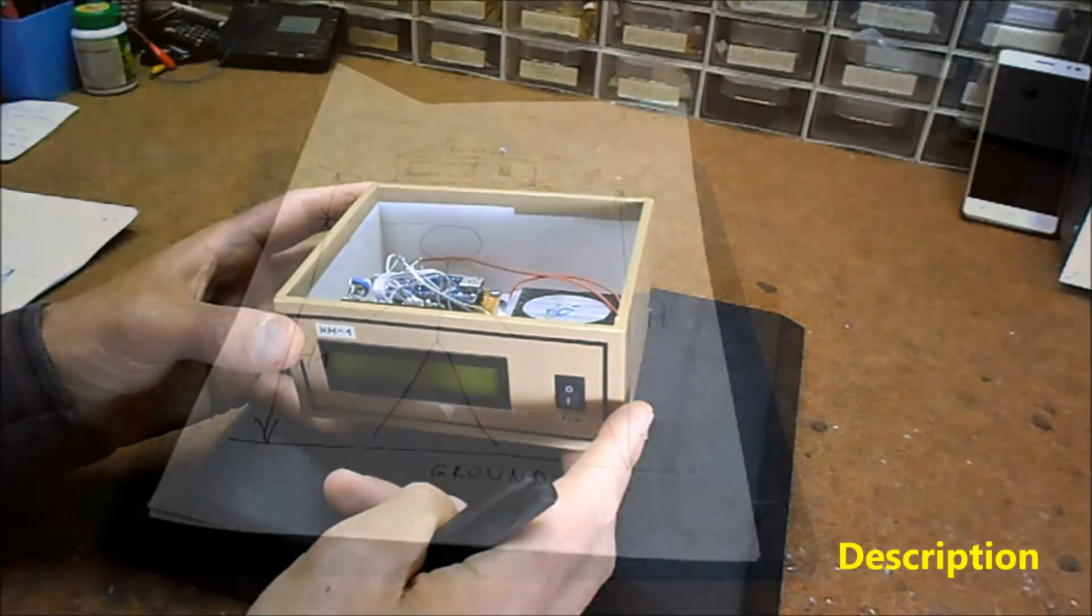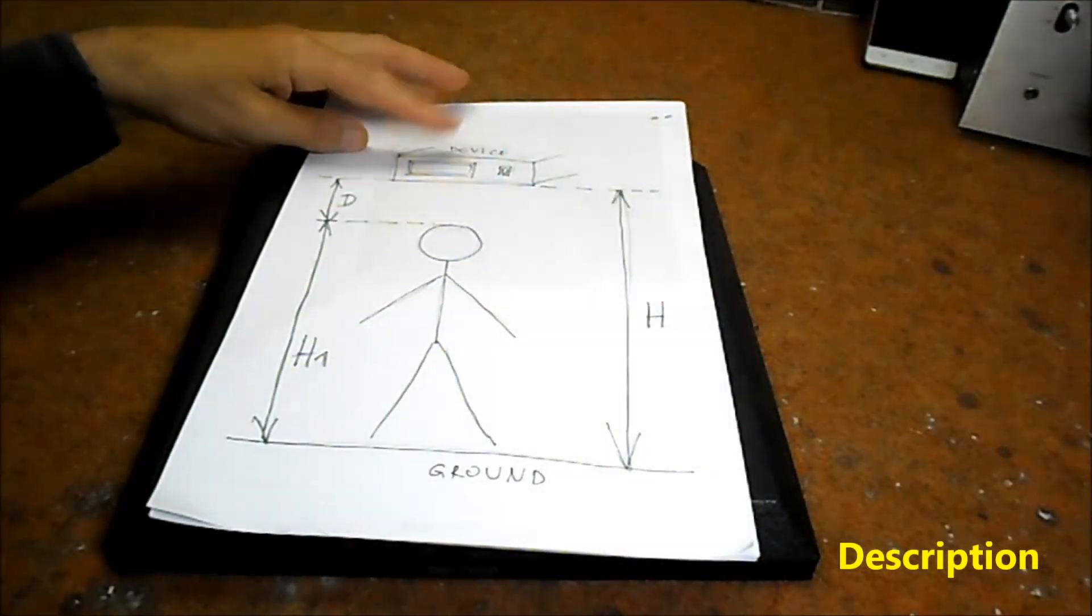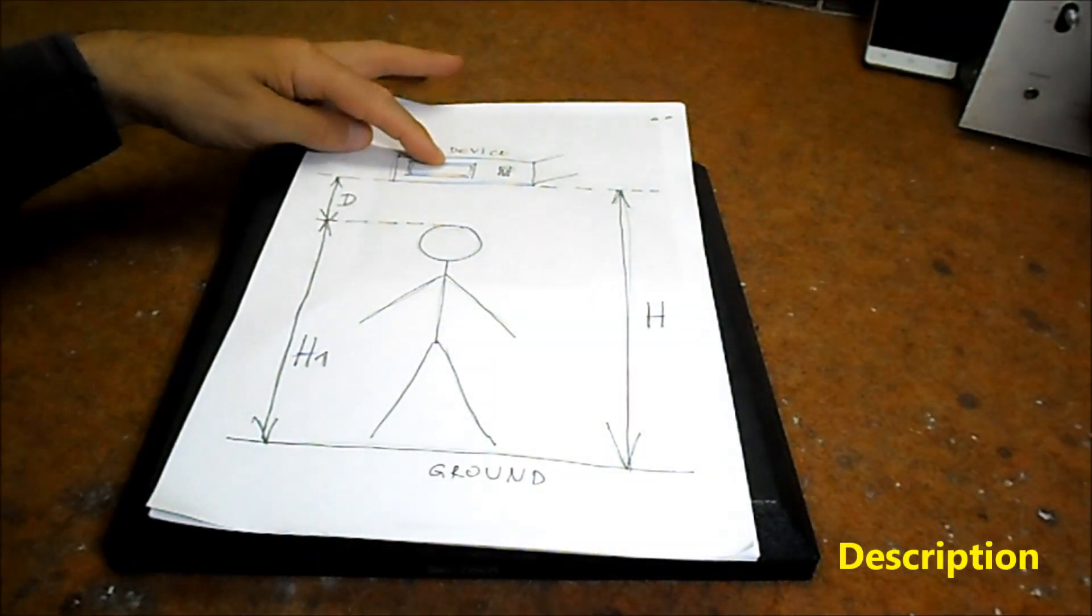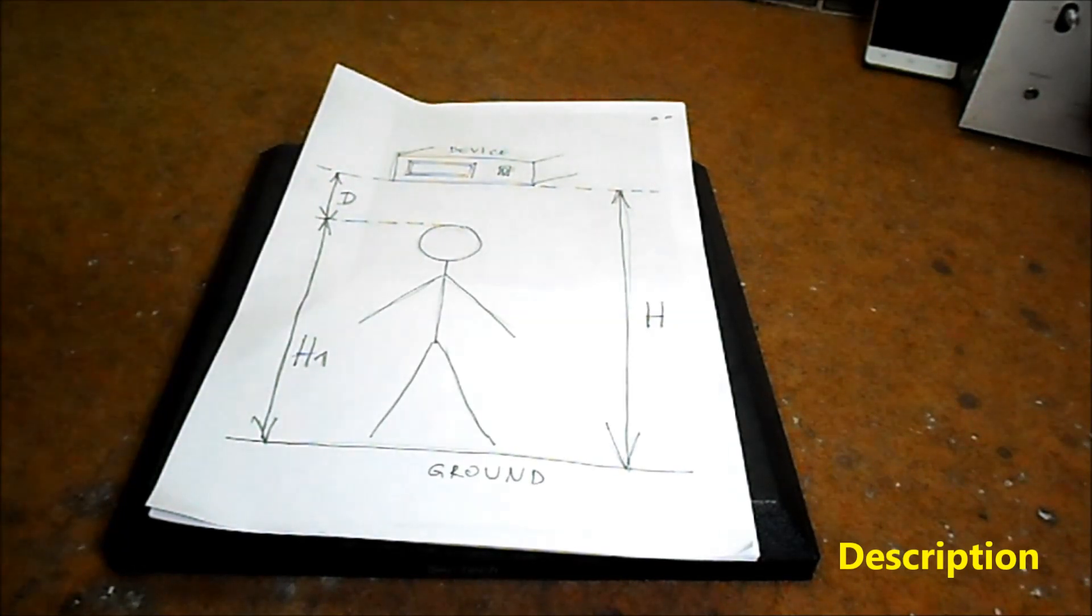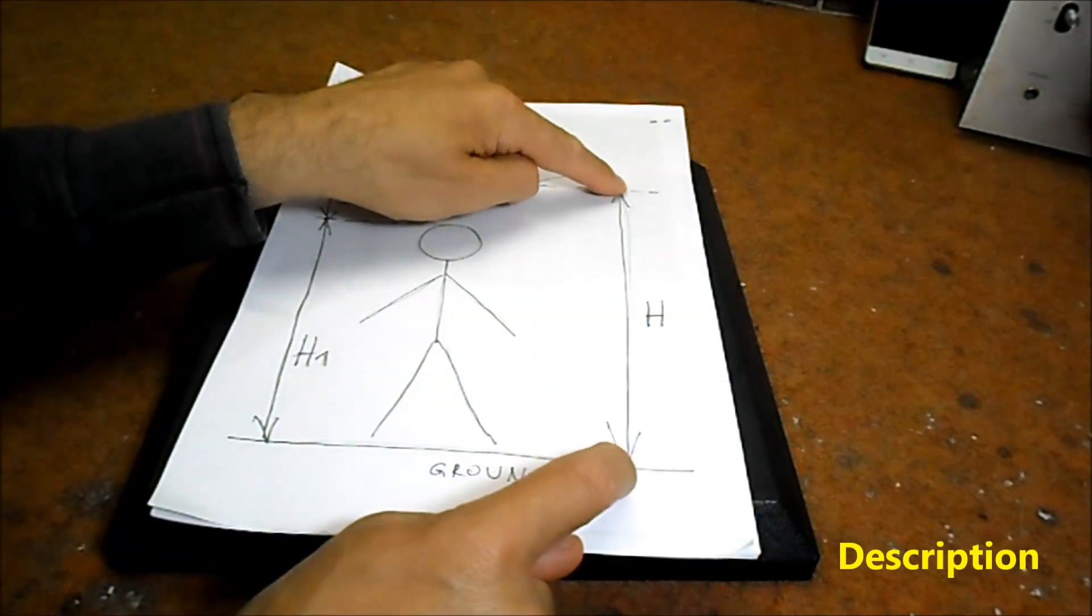Now, let's explain how it works. First, we need to install the device with the help of double-sided adhesive at a certain height, which is previously defined in code and is marked with the letter H on the picture.